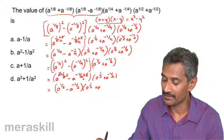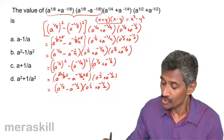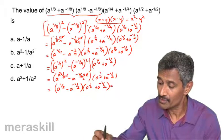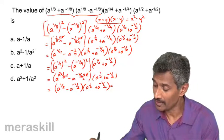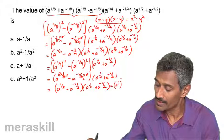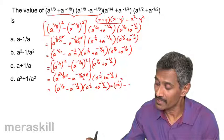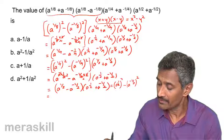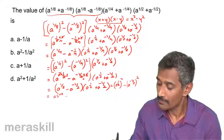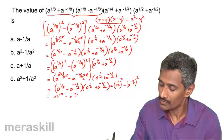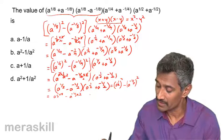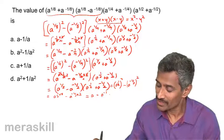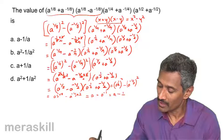So we have a raised to half minus a raised to minus half. We apply the same rule: x minus y into x plus y equals x squared minus y squared, giving us a raised to half the whole square minus a raised to minus half the whole square. Using the power of power rule, this turns out to be a raised to 1 minus a raised to minus 1, which is a minus 1 upon a.